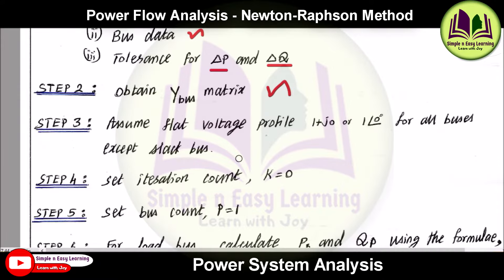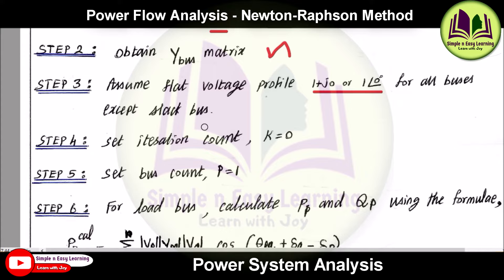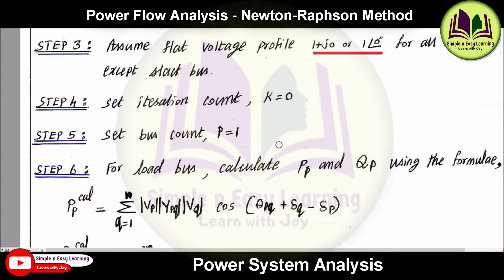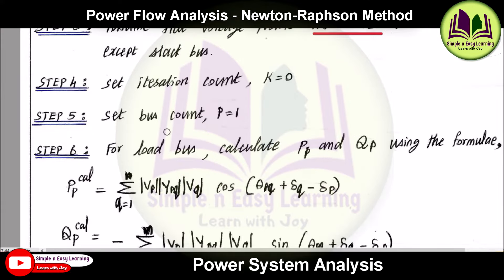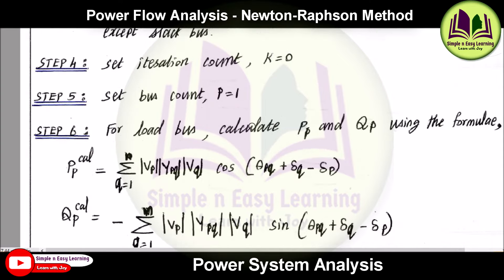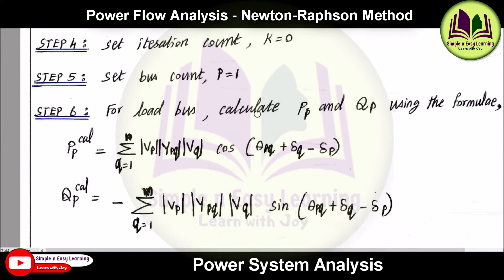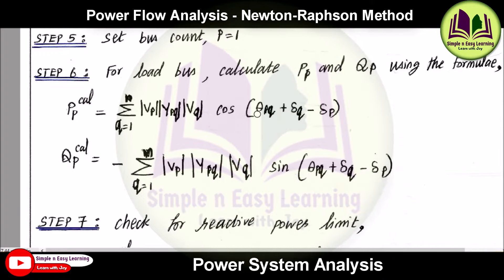Step 3: assume a flat voltage profile — 1 + j0 or 1 angle 0 — for all buses except the slack bus. Step 4: set iteration count k = 0. Step 5: start with bus count p = 1. The first bus is the slack bus. For the next bus, if it is a load bus, calculate Pp and Qp.